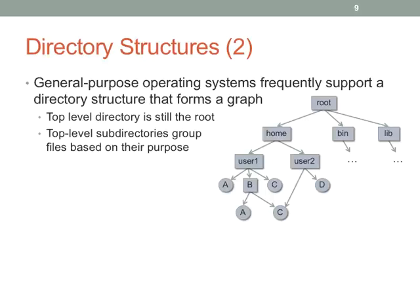Now we have much more sophisticated file systems. Most modern operating systems can have a graph as their directory structure. The top-level directory is still called the root — which is weird because on trees the root is at the bottom, but in directories it's at the top. Subdirectories group files based on their purpose. On Unix systems you have a directory for system applications, shared libraries, man pages, and so on.